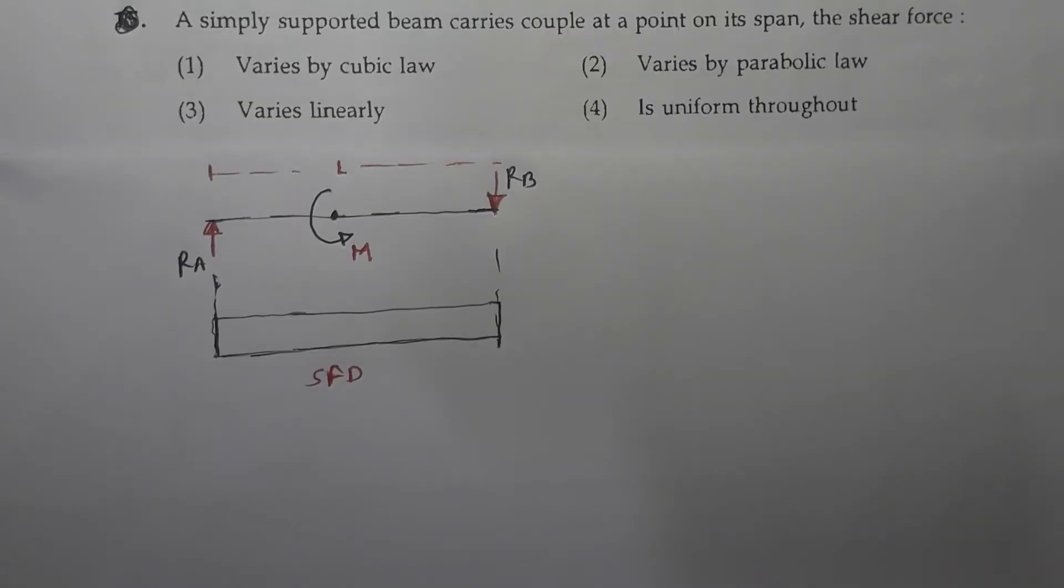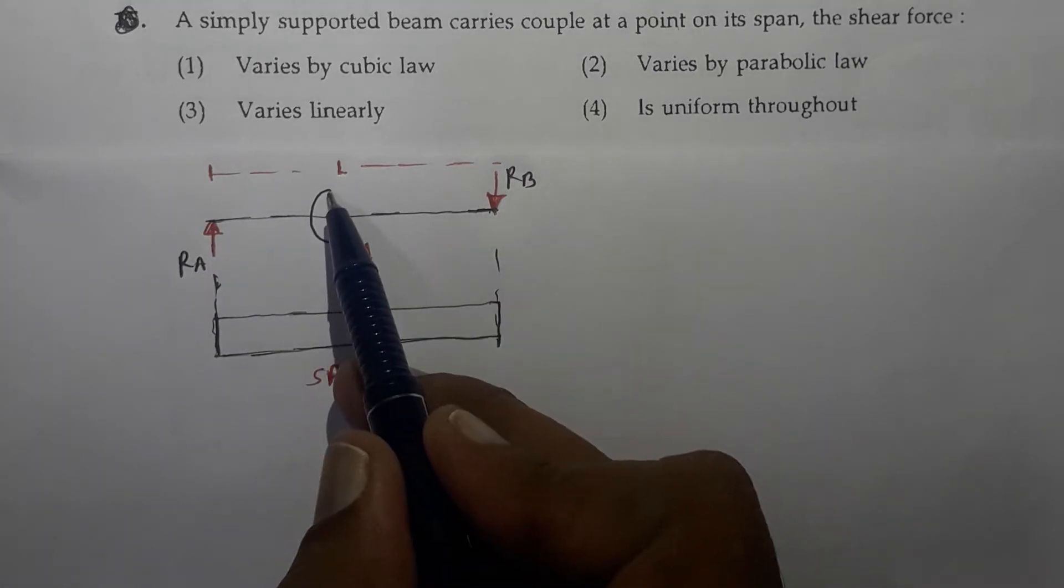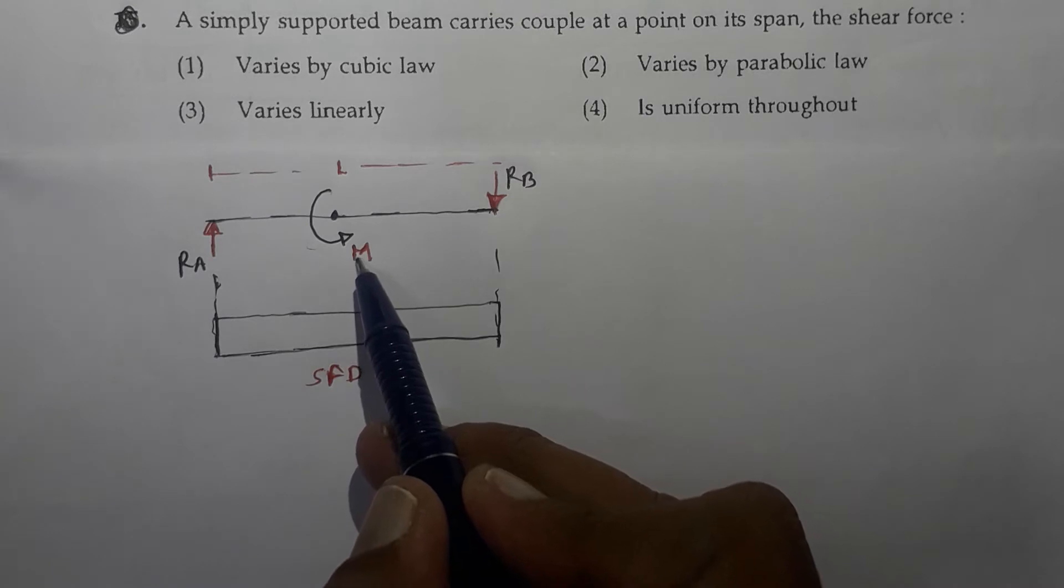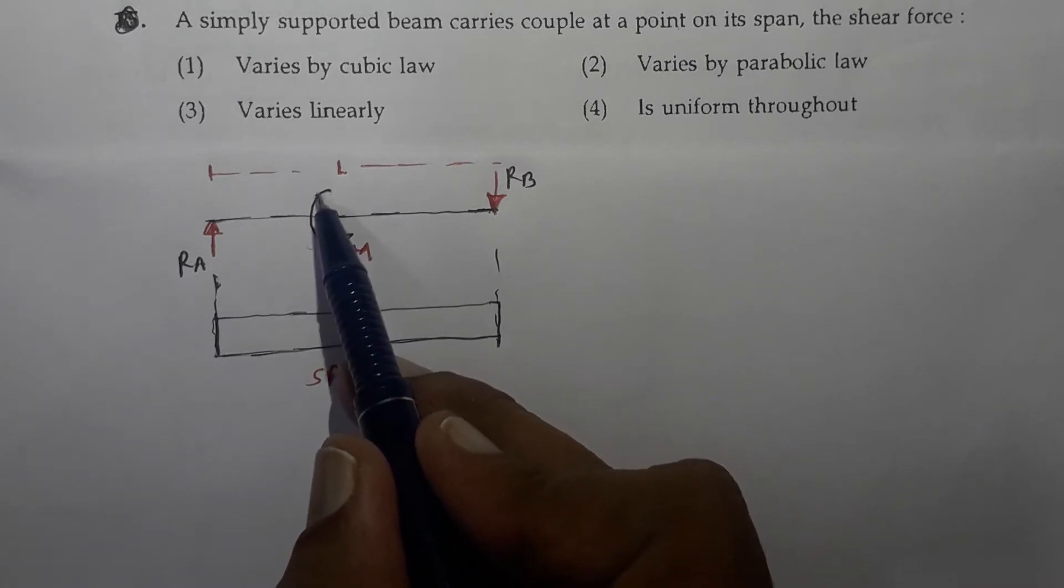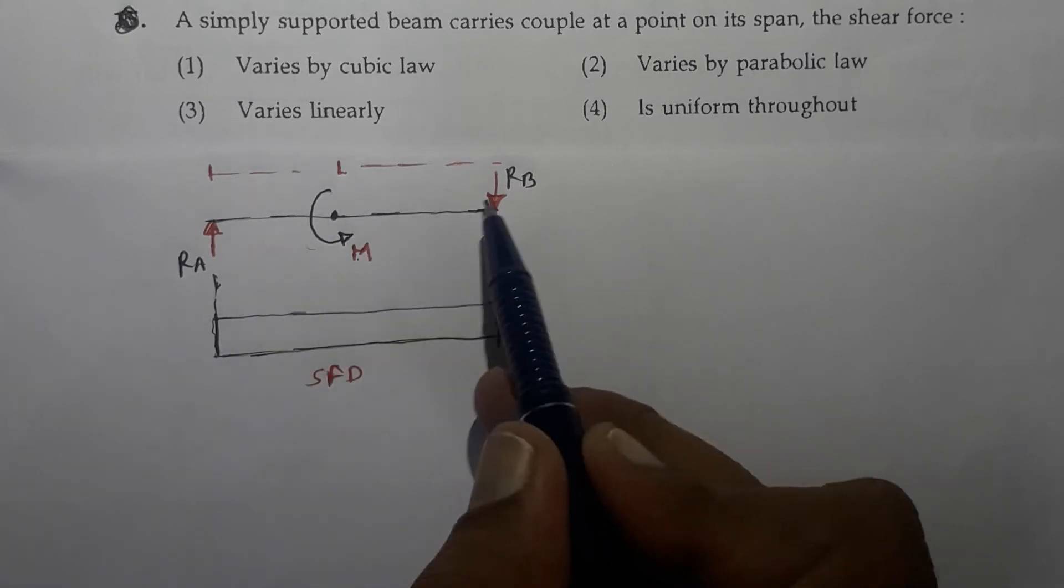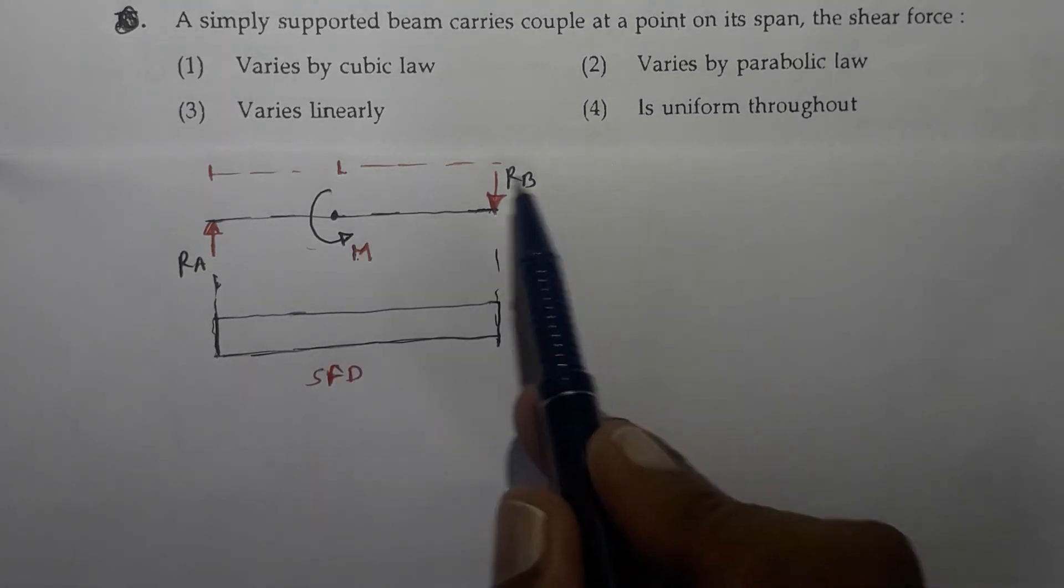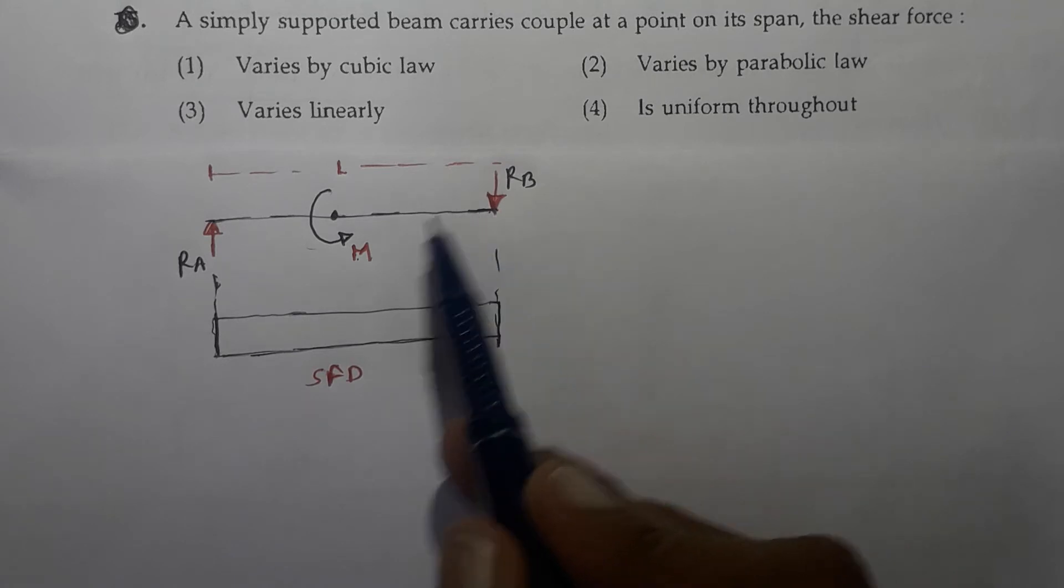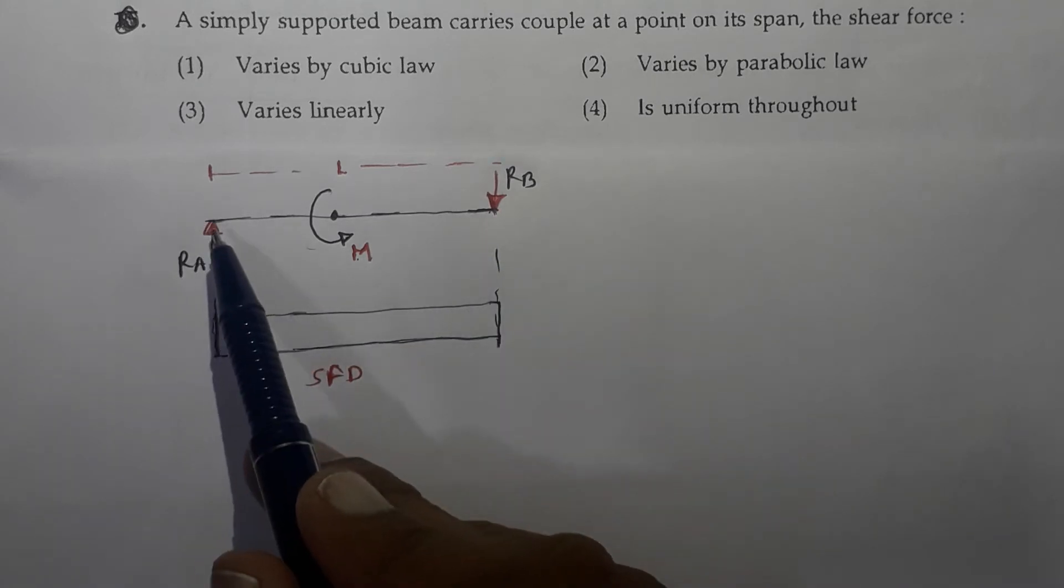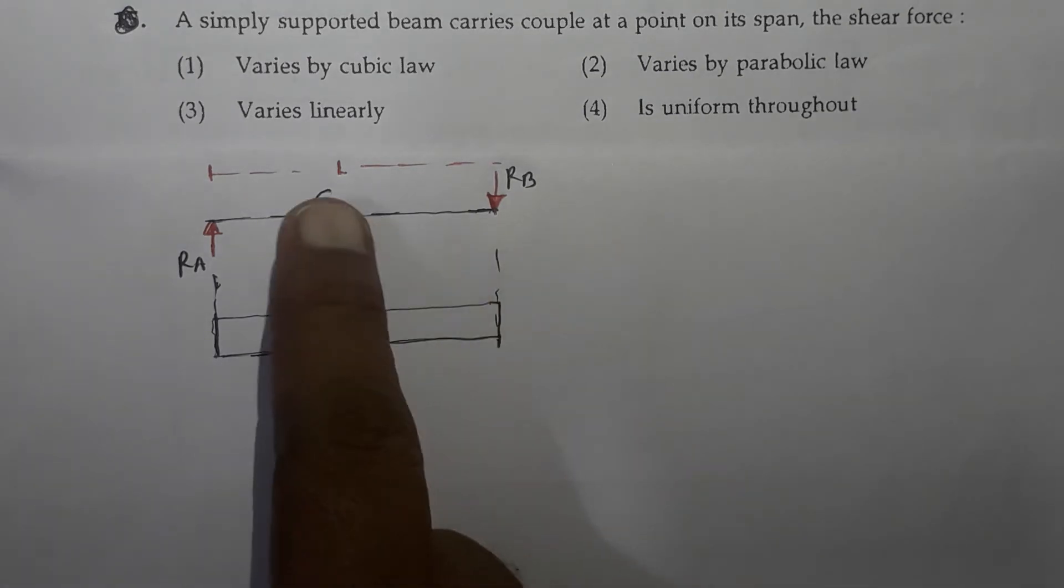Next question: a simply supported beam carries couple at a point on its span. Now I have considered a simply supported beam with a moment M, an anti clockwise moment, acting at this point. If anti clockwise moment is acting on a beam, it is obvious that the reaction will form a clockwise moment. So to balance this anti clockwise moment, the reaction at B will be acting downwards, whereas reaction at A will be acting upwards. And this is how the clockwise moment will be produced, which will balance the applied moment.